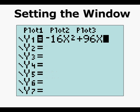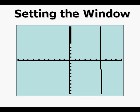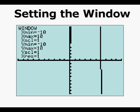Let's look at evaluating a function first. We have a function y1 equals negative 16x squared plus 96x. When we graph it, we really can't see a whole lot. We see our existing window here in the upper left hand corner and we see the origin here.